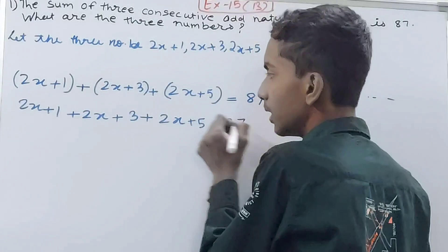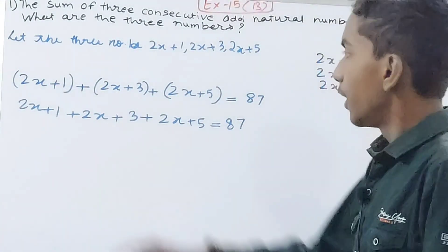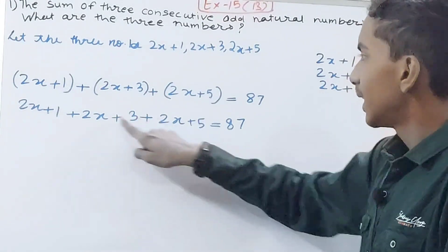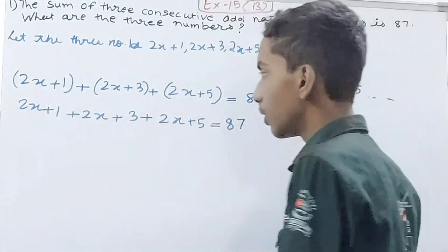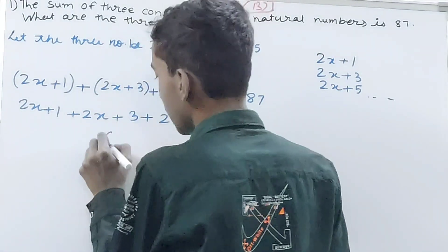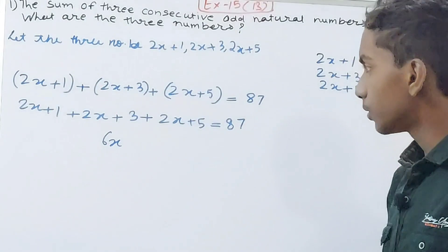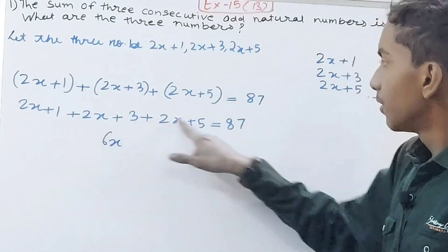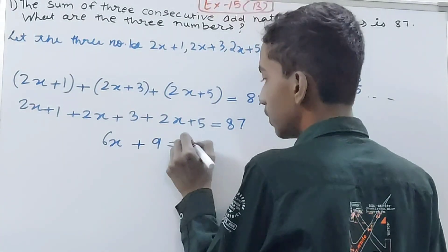Now simplify and collect your like terms: 2x, 2x, 2x. Three times 2x is 6x. Now let's combine the constants: 1, 3, 5, that is 9. So 6x + 9 = 87.